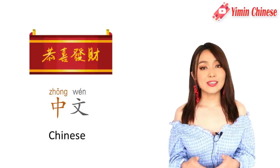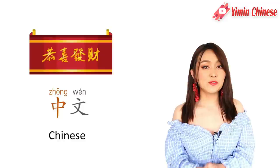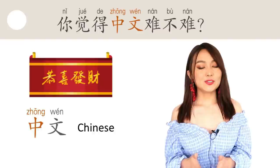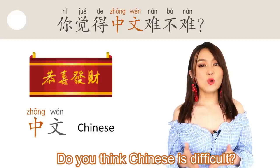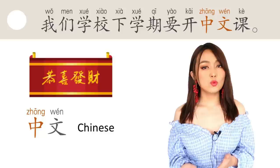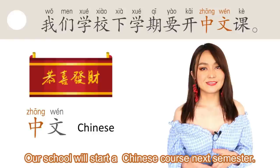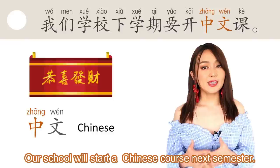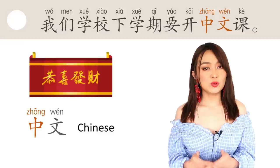Another one is 中文, Chinese language. Although in English it's translated to Chinese, keep in mind that it only refers to the language, not people. 比如说，你觉得中文难不难？ Do you think Chinese is difficult? Another one: 我们学校下学期要开中文课。 My school is going to start a Chinese course next semester.